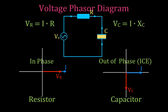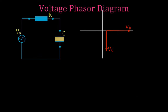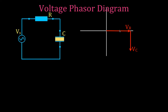Now we're going to draw the voltage phasor diagram. We have the voltage across the resistor along the x-axis, and the voltage across the capacitor along the negative y-axis because the voltage lags the current. To get the voltage of the source, I'm going to add these two vectors. Because they're vector quantities I can use the head-to-tail method, which gives us a nice right triangle. The yellow vector — the hypotenuse — represents the voltage of the source.